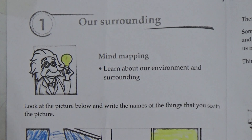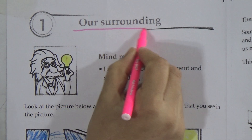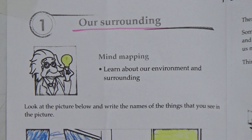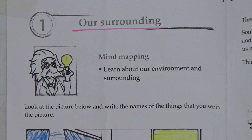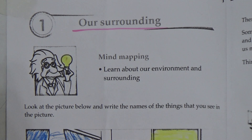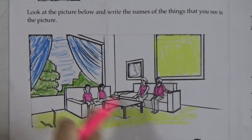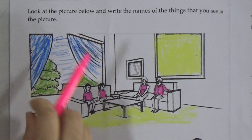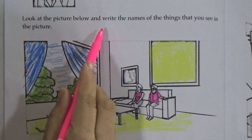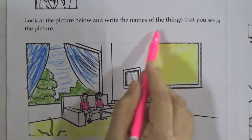Our today's topic is Chapter 1, and this is our first chapter. Our chapter name is 'Our Surrounding.' Now we will read this chapter. First, we learn about our environment and surroundings. Look at the picture below and write the names of things that you see in the picture.